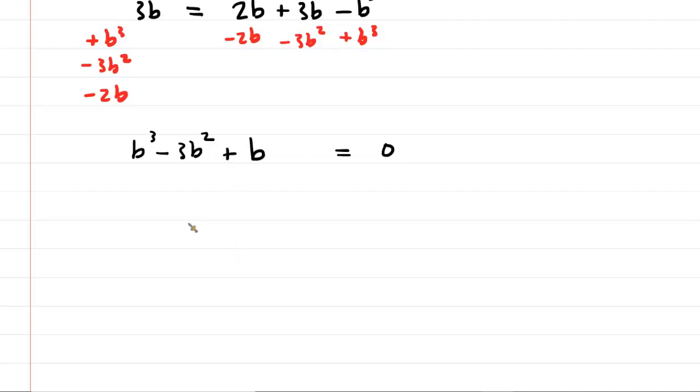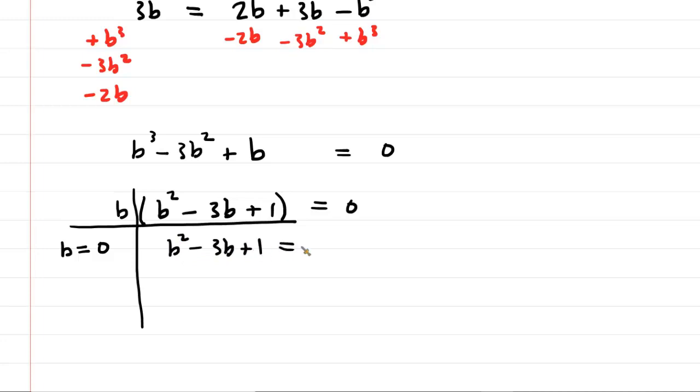So why don't we factor b out of this? So we'll have b times b squared minus 3b plus 1. This is set equal to 0. It would be wonderful if the expression inside the parentheses would factor for us. It doesn't look like it's going to. So we're going to have to use the quadratic formula. Recall before applying the quadratic formula that we have to set each factor equal to 0. So we would have b equals 0. And then we would have b squared minus 3b plus 1 equals 0.